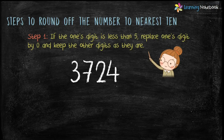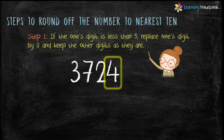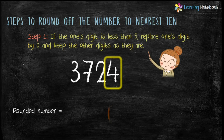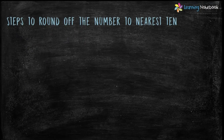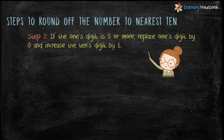Let's take another example: 3724. Here the one's digit is 4, which is less than 5. Therefore replace 4 by 0 and keep the other digits as they are. So the rounded number is 3720.